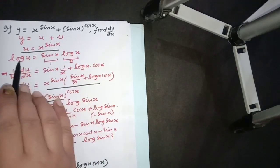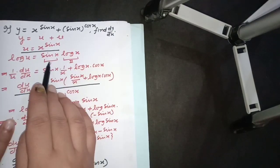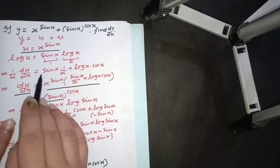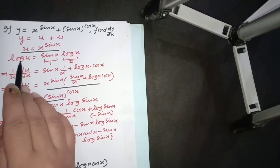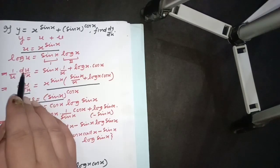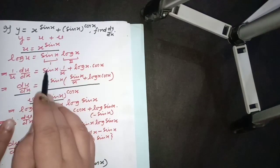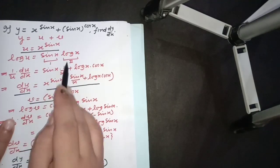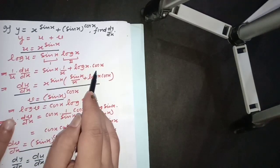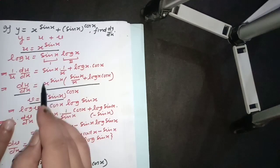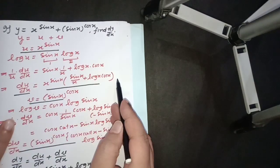Take u and v as separate functions and take the log on both sides. There will be two functions, and use the product rule. Log u will come out 1 upon u times du upon dx. First and second functions: first function times differentiation of second, plus second times differentiation of first. And by cross multiplying u, we will get du upon dx. It is the first part.